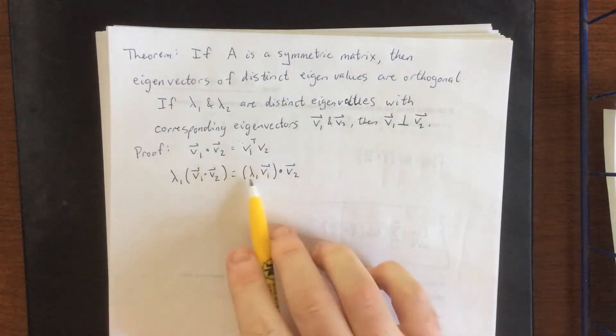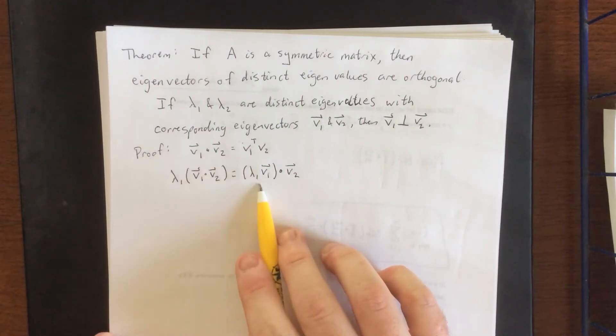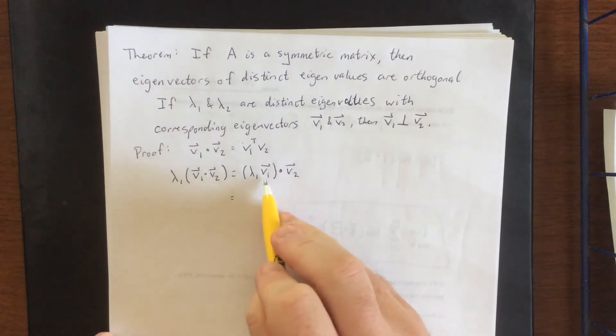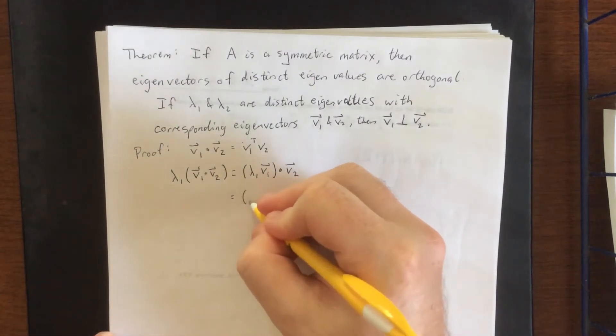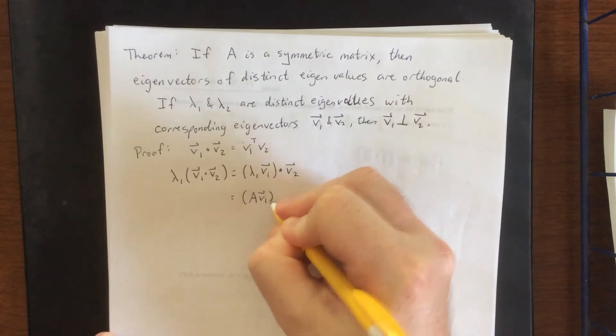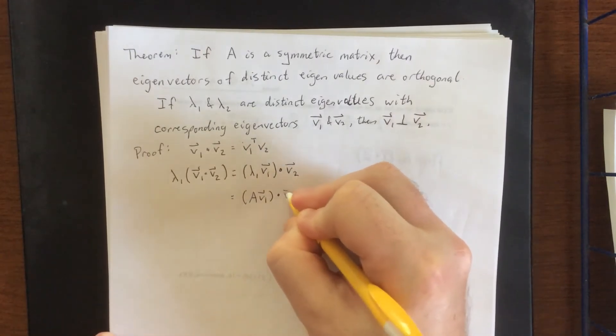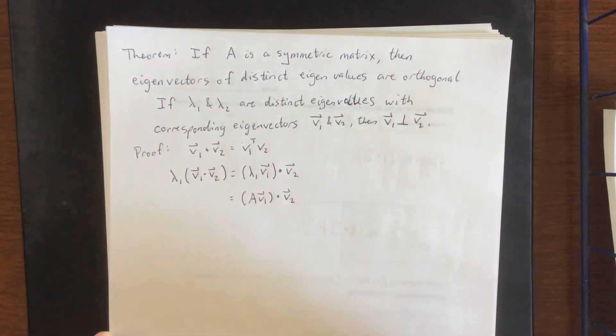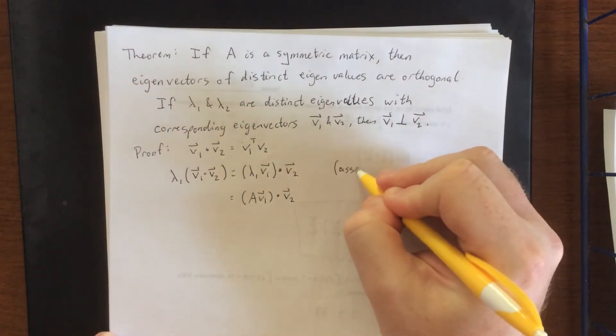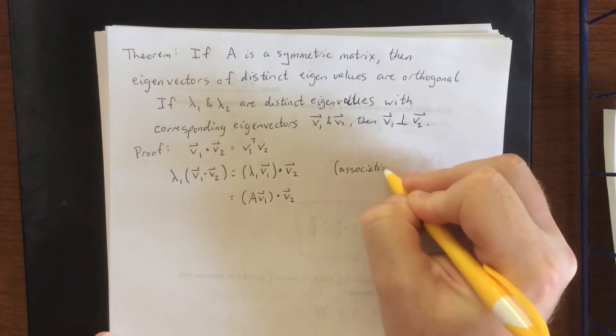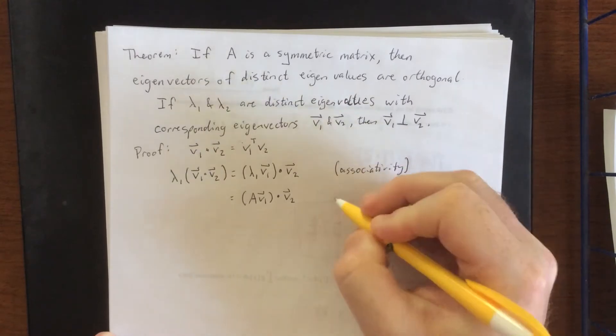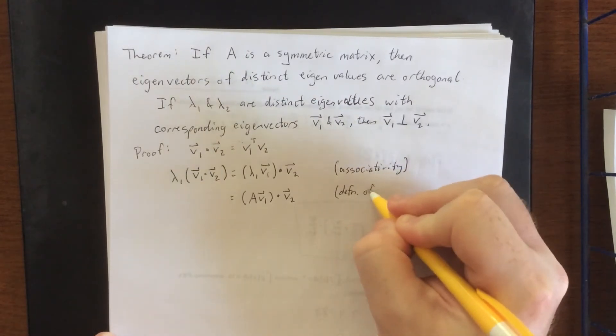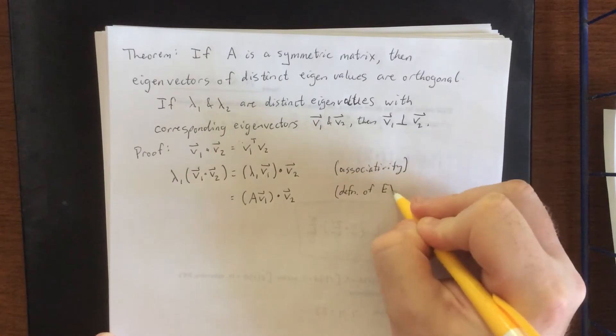That's the, again, the associativity. Now according to the definition of an eigenvector, if I take an eigenvalue times an eigenvector, that's the same as the corresponding matrix times the corresponding matrix times that eigenvector, then we'll dot that with V2. So here we'll say associativity. And then here we're using the definition of the eigenvalue eigenvector problem.